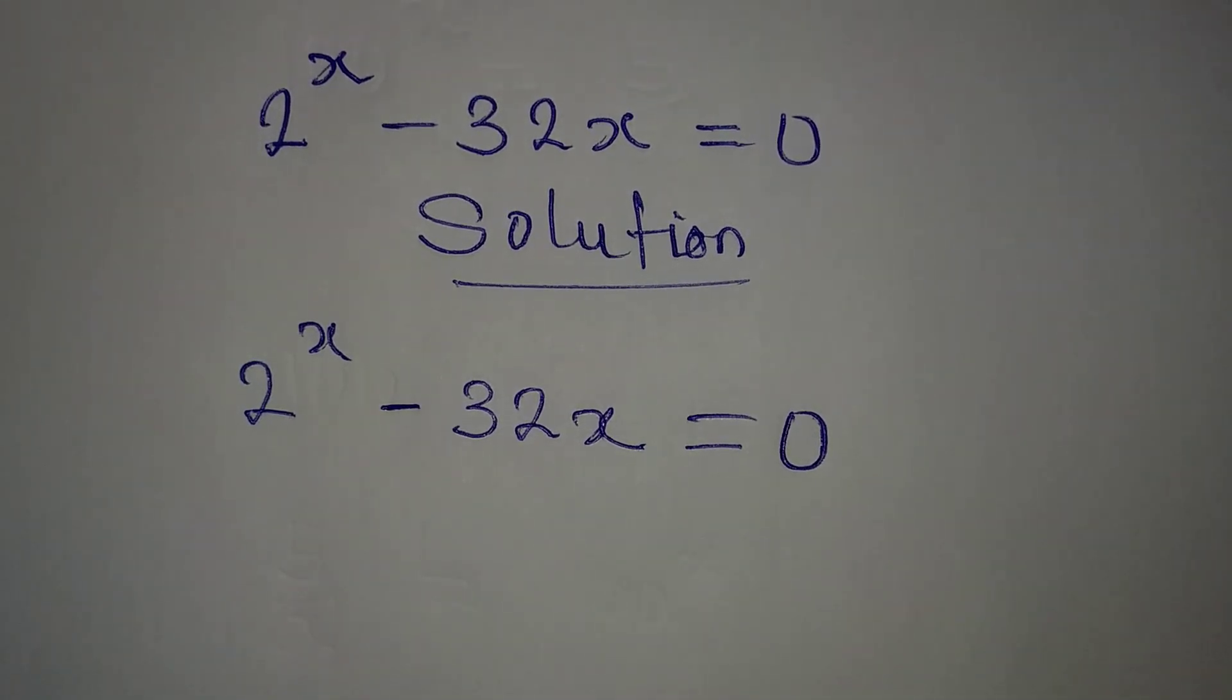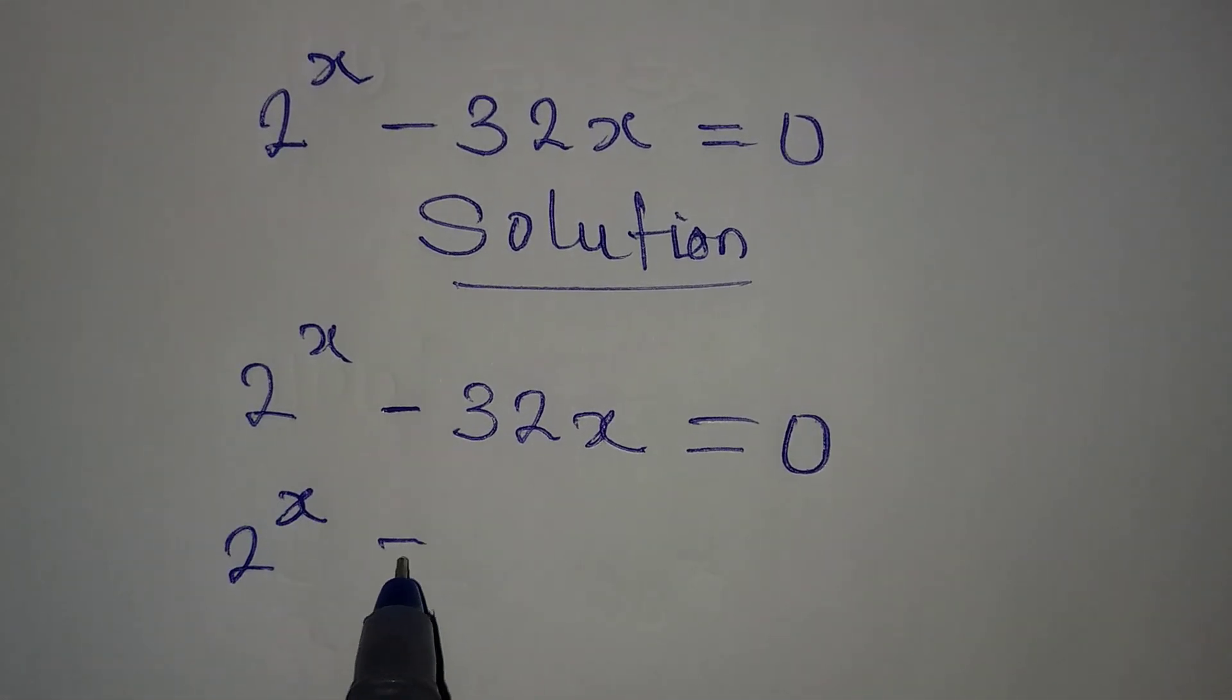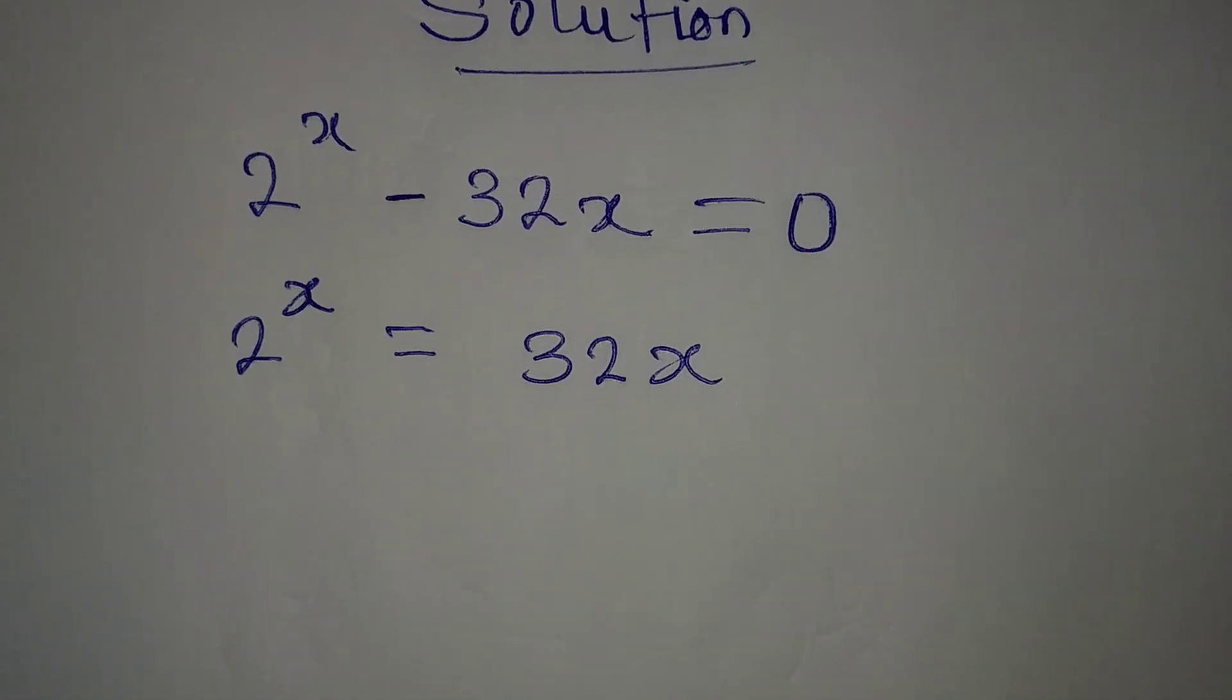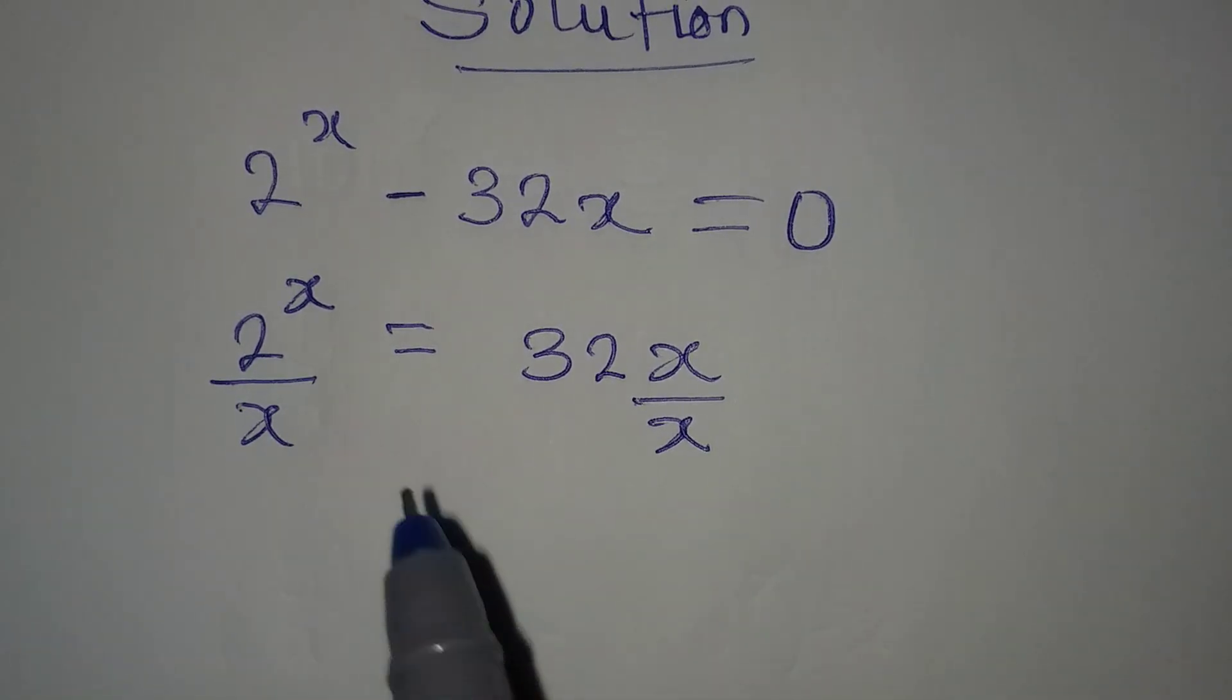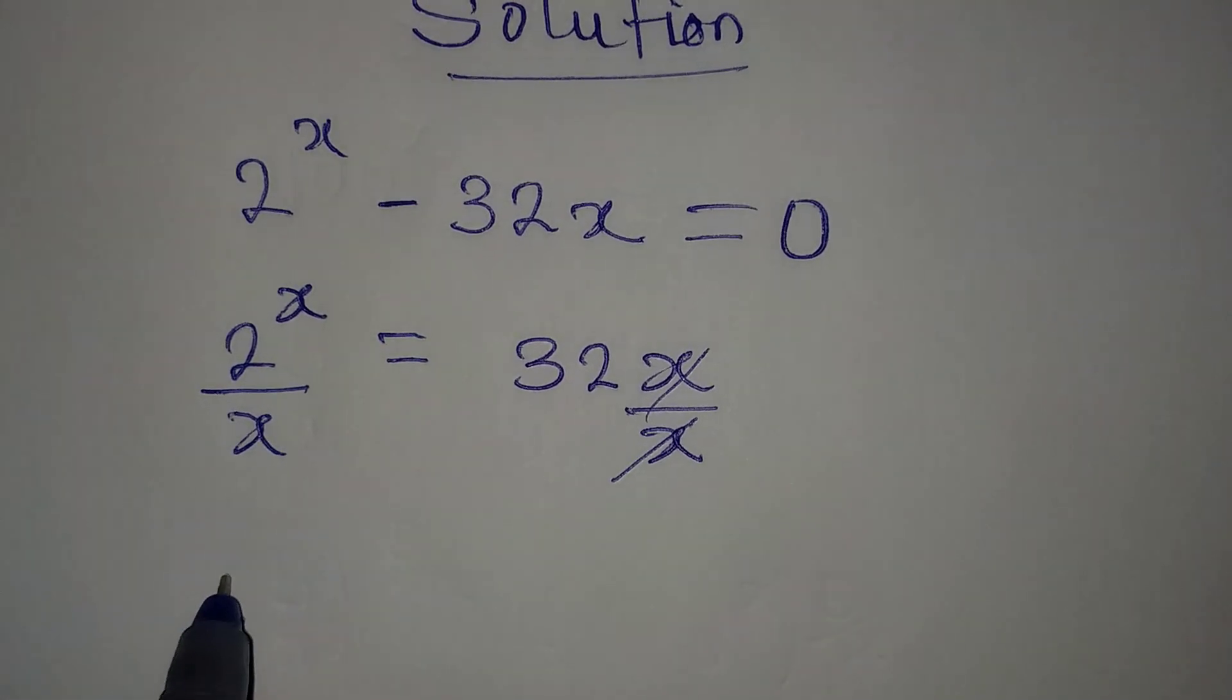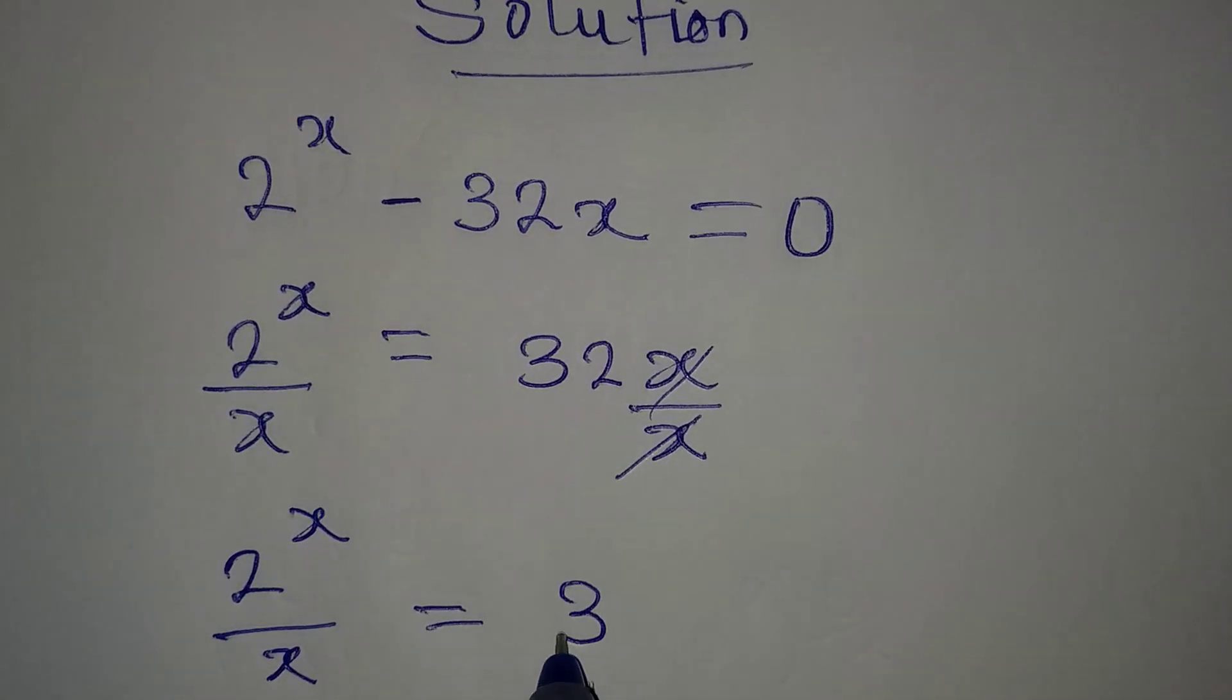Now what I will do is take this to the right, so we have 2 to the power of x equal to 32x. The next thing to do is to divide by x. This way, the terms with x will be on the same side. Now 2 to the power of x over x is equal to 32.